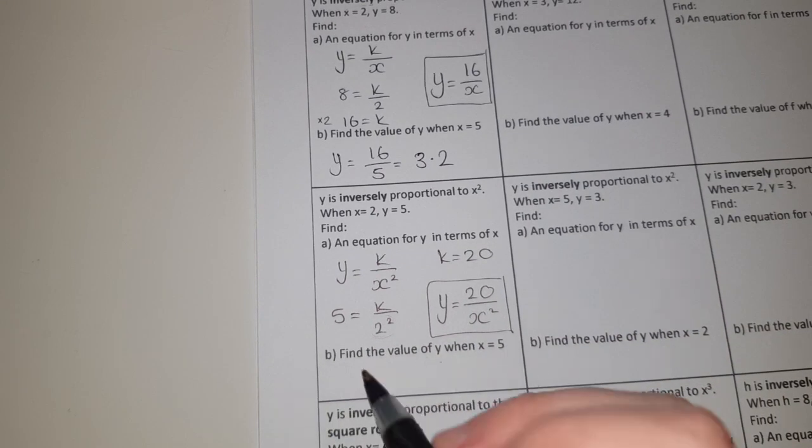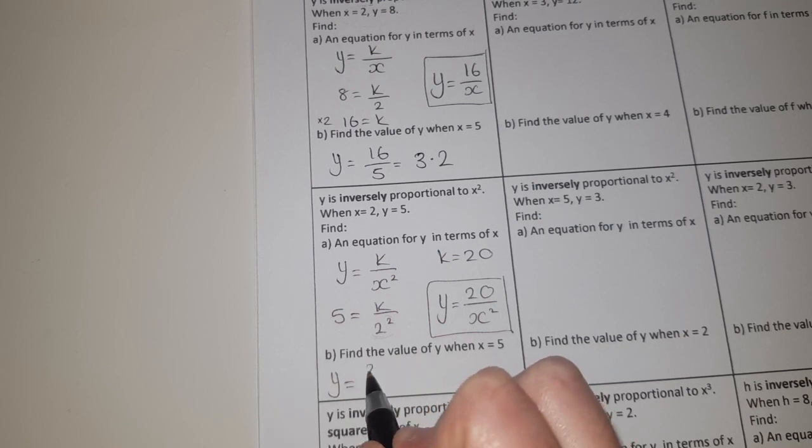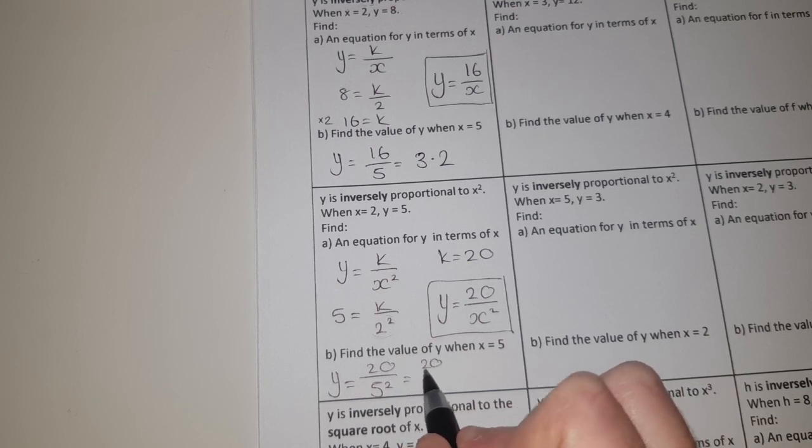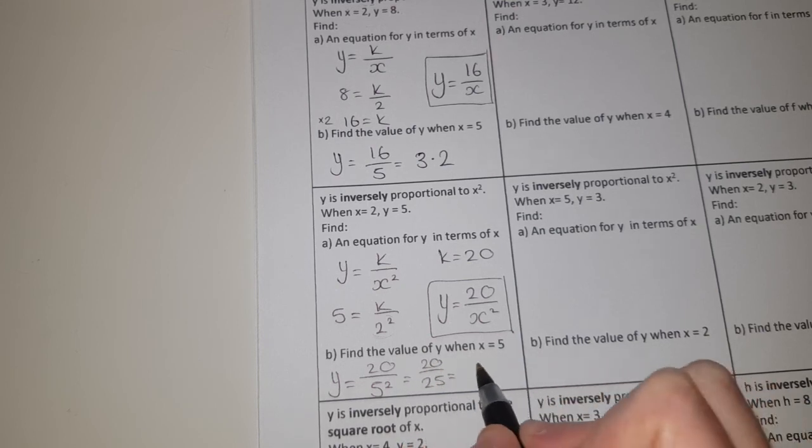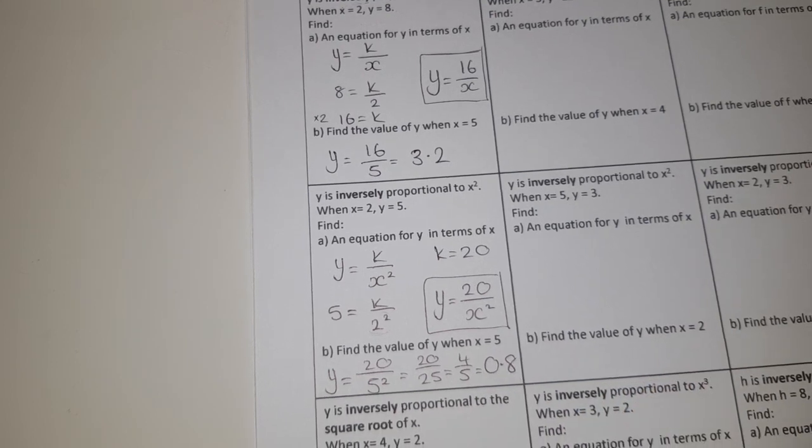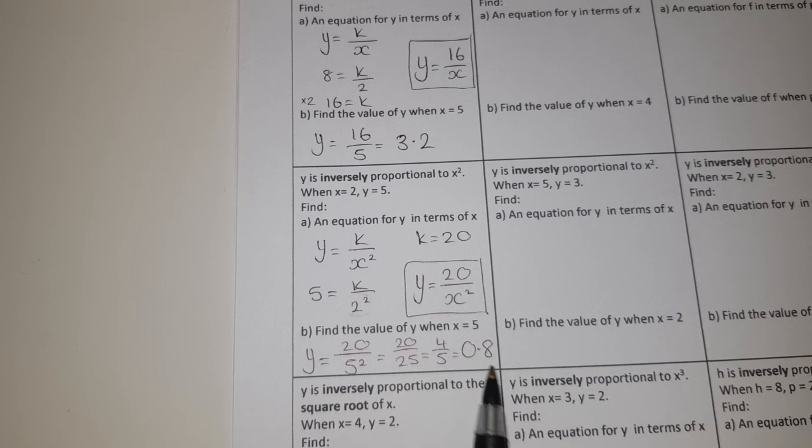And again find the value of y when x equals 5. Well y equals 20 divided by 5 squared. Since 5 squared is 25, you've got 20 over 25, which simplifies to 4 fifths or 0.8. You can just type that into a calculator.